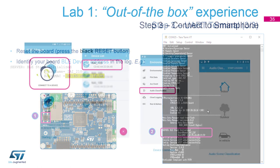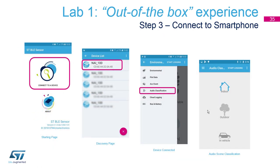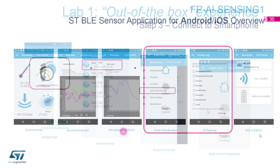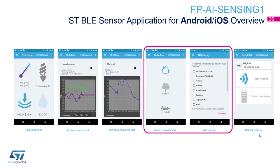Once your board is programmed, use the STBLE Sensor app on your Android phone to find your device and go to the audio classification page. Other app features include raw sensor data plotting and battery level display for battery-powered devices. The two important tabs for the AI pack are the AI algorithm page — showing either audio classification or activity recognition depending on the binary flashed — and the AI data log page, where you can select which sensor to log.